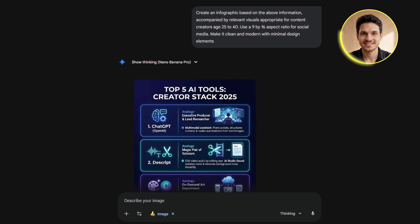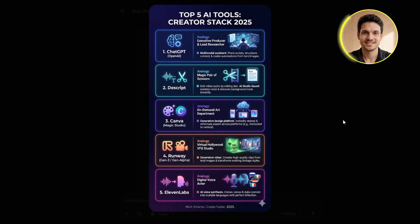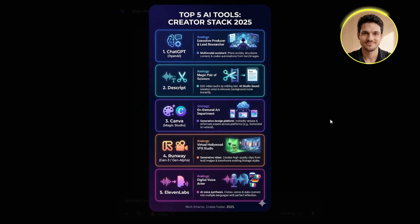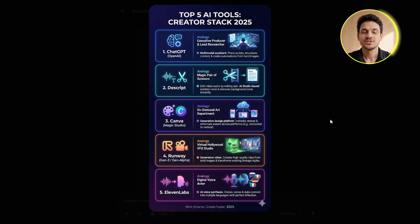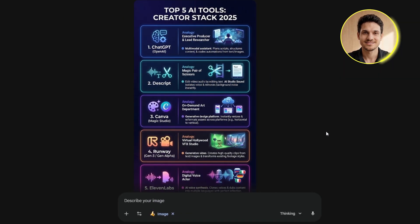And just like that, within seconds, I have a professional-looking infographic. Look at this — the text is very easy to read, with no weird spelling errors or made-up letters. The layout is clean, the visual hierarchy makes sense, and it actually looks like something you'd see in a professional presentation. This is the game changer with Nano Banana Pro. Previous AI image generators would really struggle with creating clean, readable text, but this handles typography beautifully. Every word is clear and readable — you can actually use this in real projects without feeling embarrassed about the quality.